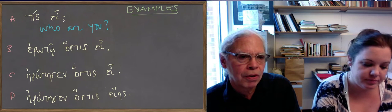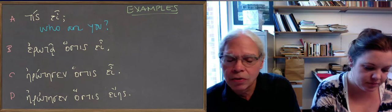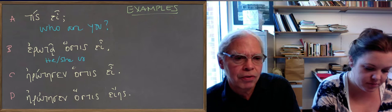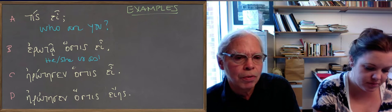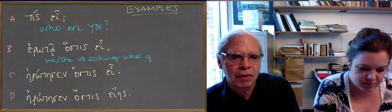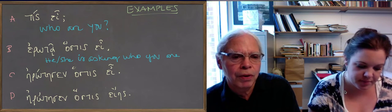So erotao means he or she is asking, and then we change the direct interrogative tis to hostis, although you can actually keep it there. This means he or she asks, or is asking, who you are. So this is the indirect interrogative hostis. In other words, you're keeping the verb the same, ei.